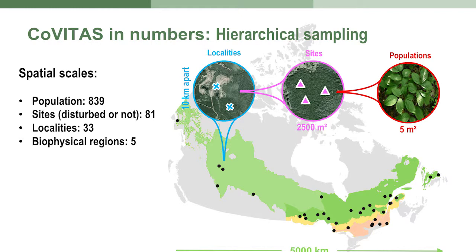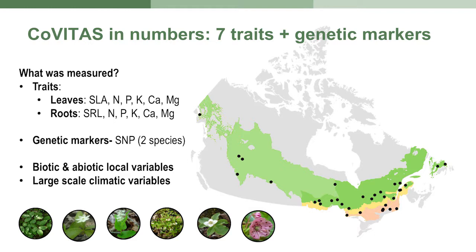We used a hierarchical sampling design. We work at the population level — we couldn't go to the individual because these are all clonal species. We have sites that are some disturbed, some undisturbed because we wanted to have this breadth of variability, located in 33 localities from Yukon to Newfoundland. We measured leaf traits and root traits that were analogous, plus genetic markers for two species — Vaccinium angustifolium and Cornus canadensis — and biotic and abiotic variables measured in the field, plus large-scale climatic variables.